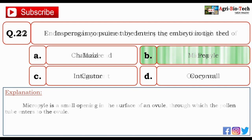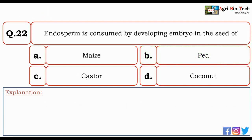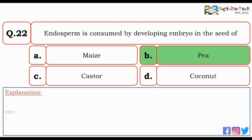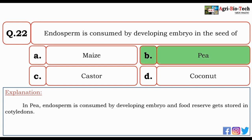Next question: endosperm is consumed by the developing embryo in the seed of — maize, pea, castor, or coconut? The correct option is B — pea. In pea, endosperm is consumed by the developing embryo and the food reserve gets stored in the cotyledons.